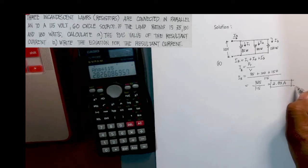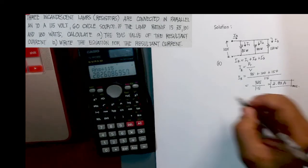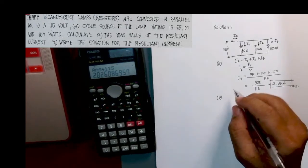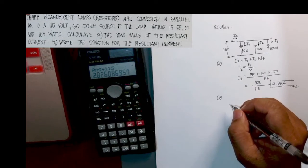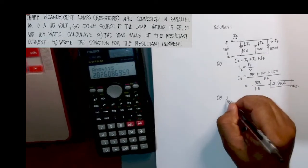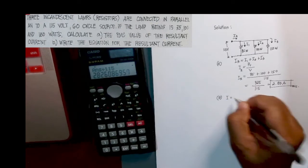Now let us have letter B in which we are to write the equation for the resultant current.